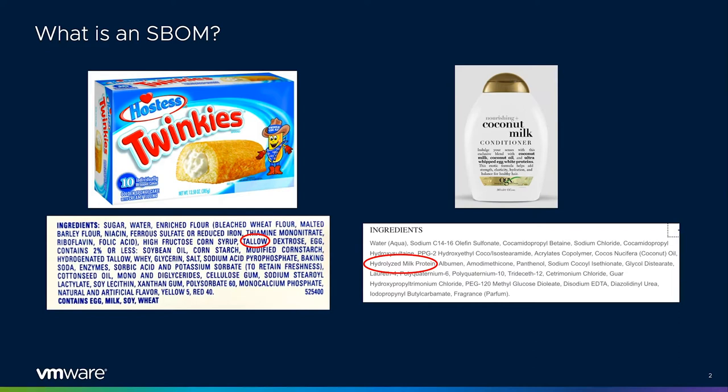You wouldn't know that Twinkies were not vegetarian until you looked at the ingredients. I prefer the example of the coconut milk conditioner. After looking at the ingredients, you realize that when the supplier said coconut milk, they meant coconut and milk — see the hydrolyzed milk protein there? The concept is the same for software. Each ingredient is a software component.